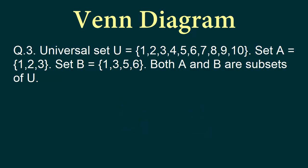Let's take a look at the next problem. The universal set is again 1 through 10. Set A has elements 1, 2, 3 and set B has elements 1, 3, 5, and 6. Both A and B are subsets of U. But this time, if we look closely, we notice that the element 1 is common between set A and set B. Also 3 is a common element between A and B. That means when we draw the sets, they should overlap.